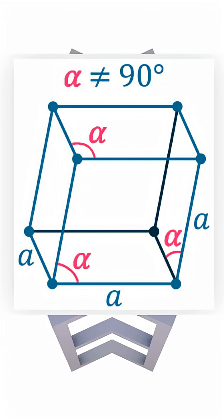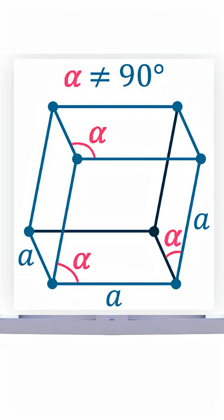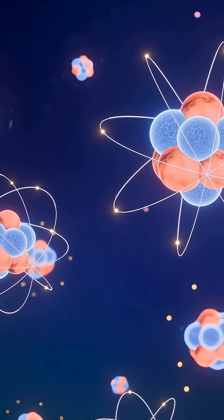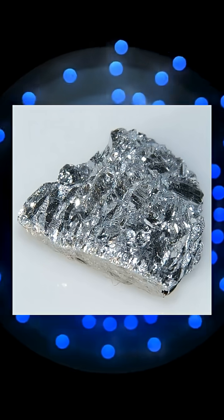Antimony crystallizes in a rhombohedral lattice, distorted by stereochemically active lone-electron pairs. These lone pairs push atoms apart. The result? Antimony expands when it freezes, conducts heat poorly, and converts temperature differences into electrical voltage with unusual efficiency.